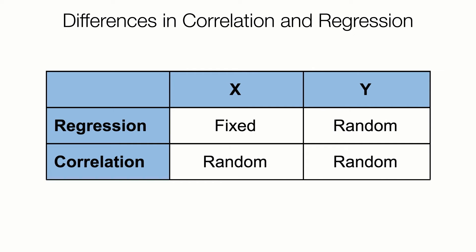And perhaps the most fundamental difference: regression assumes x is fixed with no error, such as dose amount, whereas with correlation, x and y are typically both random variables, such as height and weight, or blood pressure and heart rate.